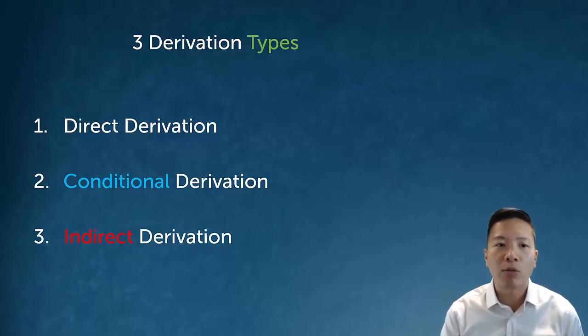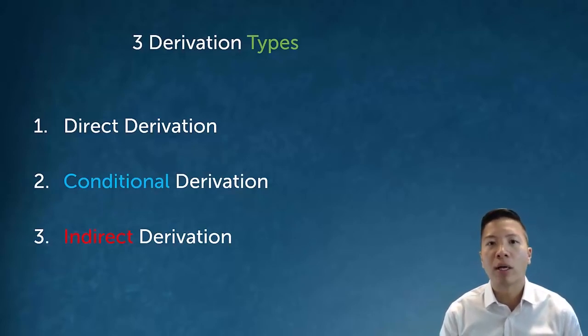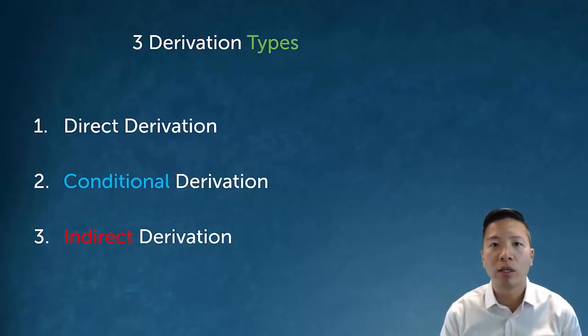It turns out that lots of proofs — probably the majority — aren't actually direct derivations. This is reflective of the fact that the majority of arguments we make in regular English, and especially in philosophy, also aren't direct. We use lots of different types of reasoning, like conditional reasoning and indirect reasoning.